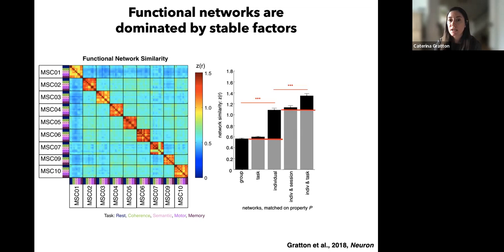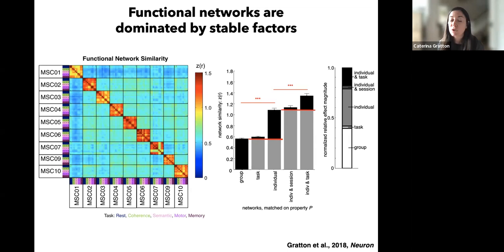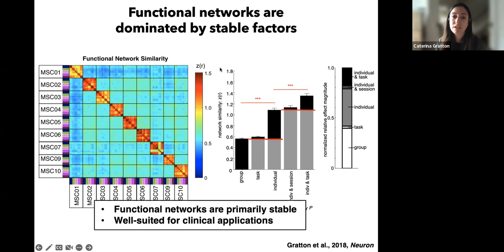Two key lessons from this analysis: first, we can find all these forms of variation — individual, task, session — and identify them as significant with just 10 participants using high-precision fMRI data. Second, these effects vary substantially in magnitude — most of the similarity in matrices is explained by stable factors, either group commonalities or individual-specific features. More transient task or day-to-day variability is substantially smaller, with the largest transient effects interacting with individual features. Functional networks are primarily stable, making them well suited for clinical applications due to their stability and sensitivity to individual differences.